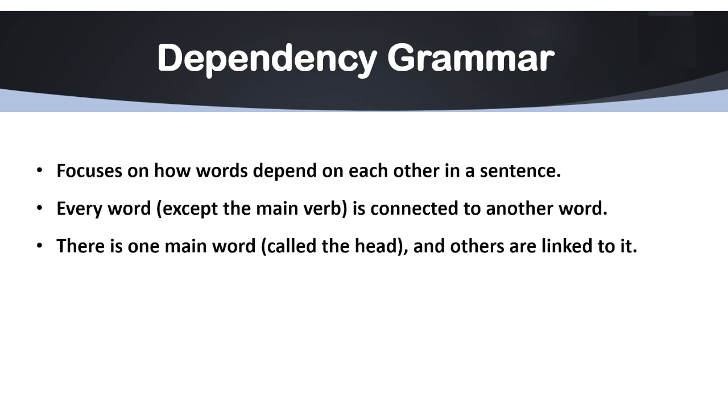Next we have dependency grammar. Dependency grammar is about how each word in a sentence is connected to another word. There is always one main word, usually a verb, and all the other words depend on it directly or indirectly.